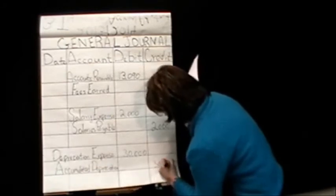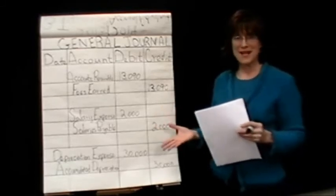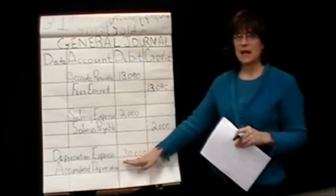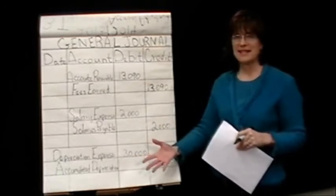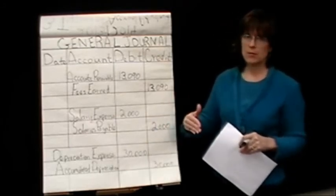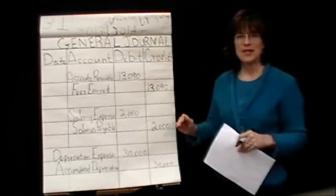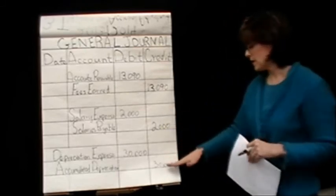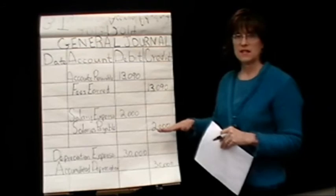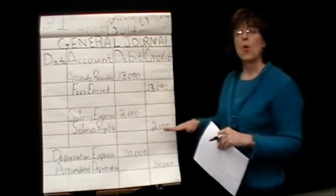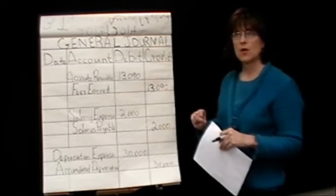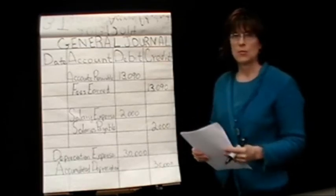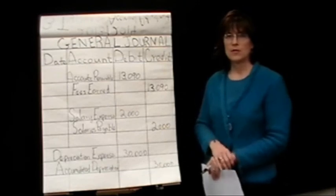I don't like to introduce a new account without explaining what type of account it is and what financial statement it goes on. Expenses go on the income statement. Accumulated depreciation, as mentioned, is a contra-asset account, so it has the opposite balance of an asset account — a credit balance, since assets normally have debit balances. It appears on the balance sheet with the assets, right next to the fixed asset being depreciated. For equipment, you'd list equipment on the balance sheet, then show accumulated depreciation beneath it, and the difference — cost less accumulated depreciation — gives you the book value. I hope this helps you in working the problems with accrual adjustments.